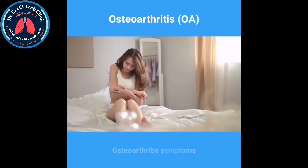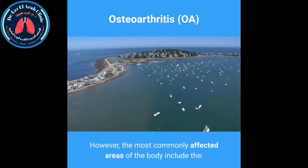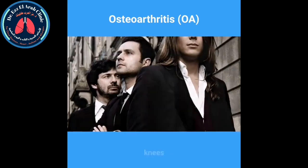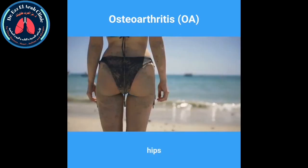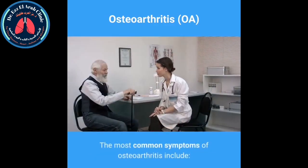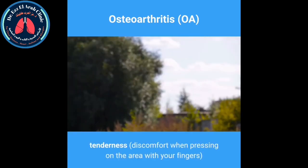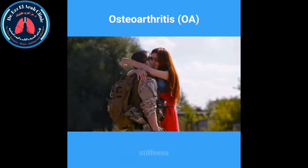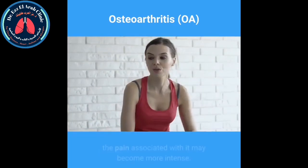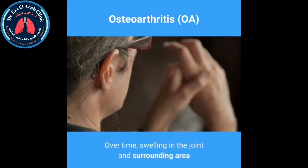Osteoarthritis symptoms. OA can occur in any joint; however, the most commonly affected areas include the hands, fingertips, knees, hips, and spine — typically at the neck or lower back. The most common symptoms of osteoarthritis include pain, tenderness, discomfort when pressing on the area with your fingers, stiffness, and inflammation. As OA becomes more advanced, the pain associated with it may become more intense over time, along with swelling in the joint and surrounding area.